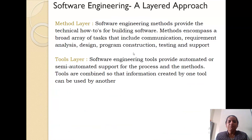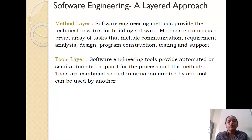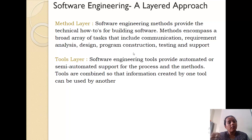Above this you have the methods layer, and it provides you the technical how-to's. The process layer tells you what is to be done, but technically how to implement it — that is defined by the methods layer. It provides the technical how-to's of how to build the software. It may have tasks like communication, requirements, analysis, design, program construction, testing, and support. So actually how you are going to implement the system — that part comes under your methods layer.